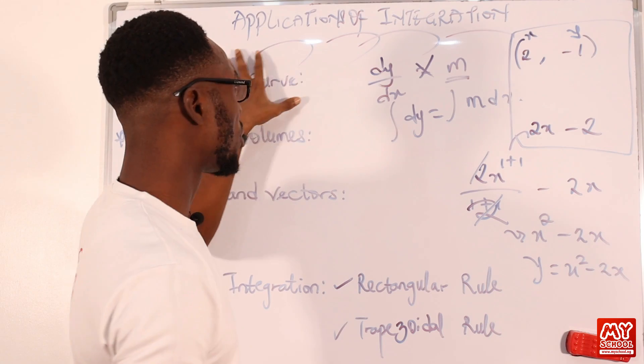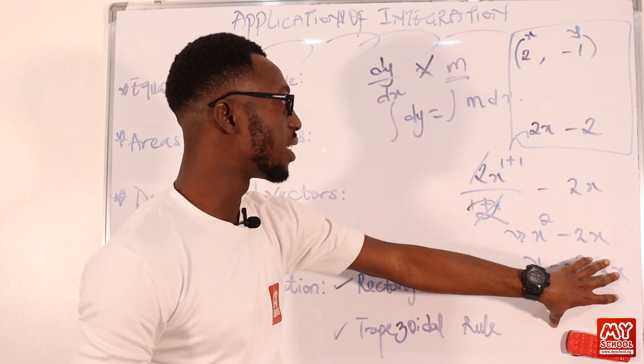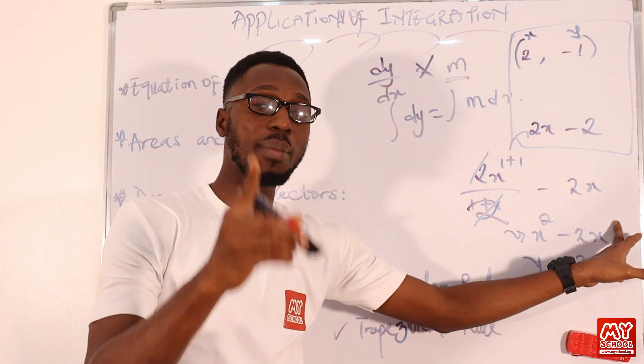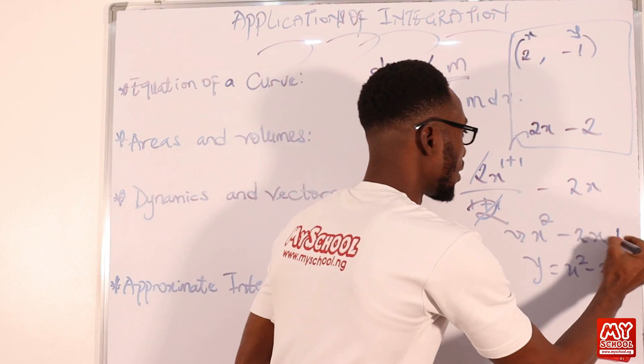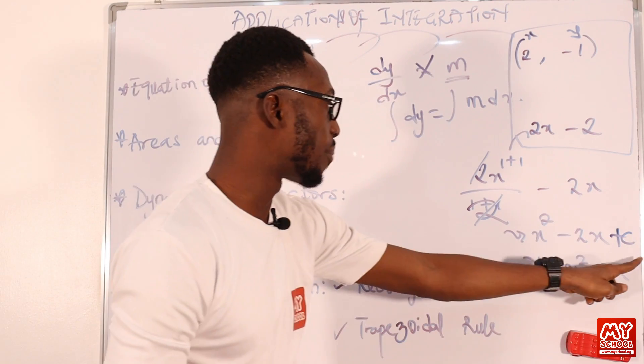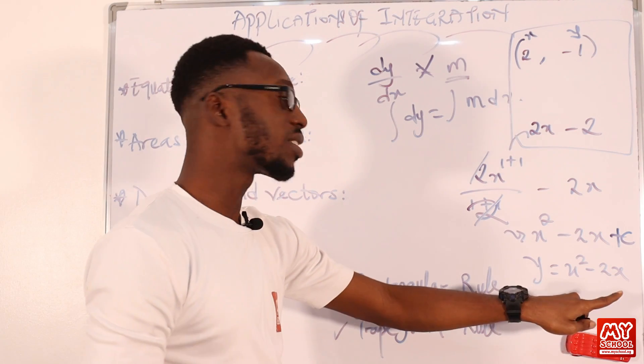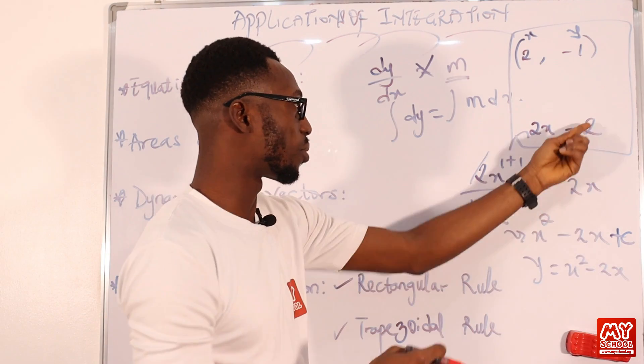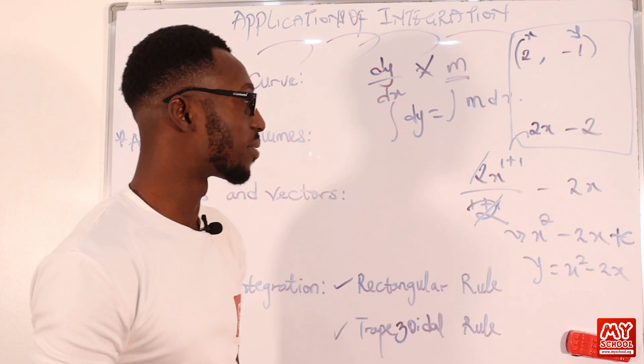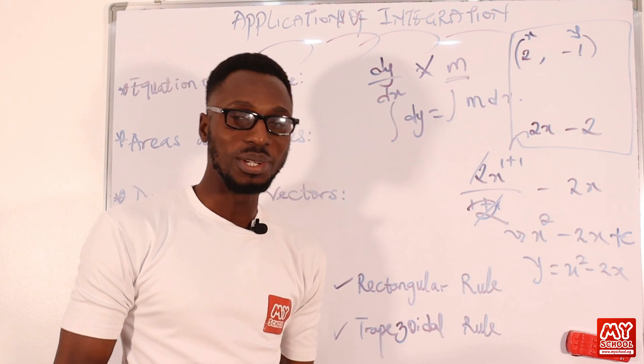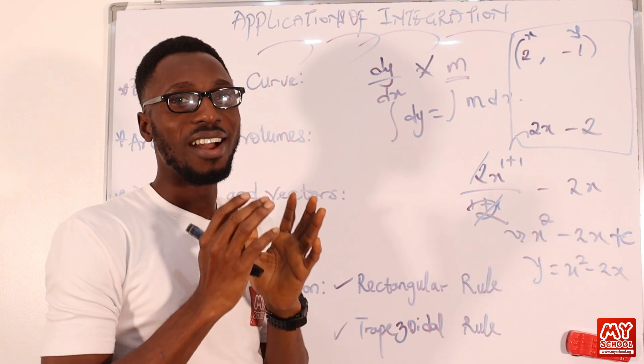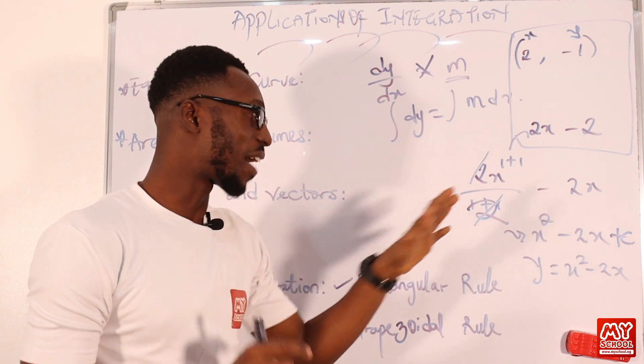From there, of course, I can now determine the equation of my curve. So once I've done this, I'm going to get the value of my c. Remember that when you integrate, you put c, this constant of integration. So I'm going to use this to get my c. Once I've gotten my c, I can rebuild the equation from here, put the value of c, then we have a complete equation. We are going to use examples to solidify this concept.